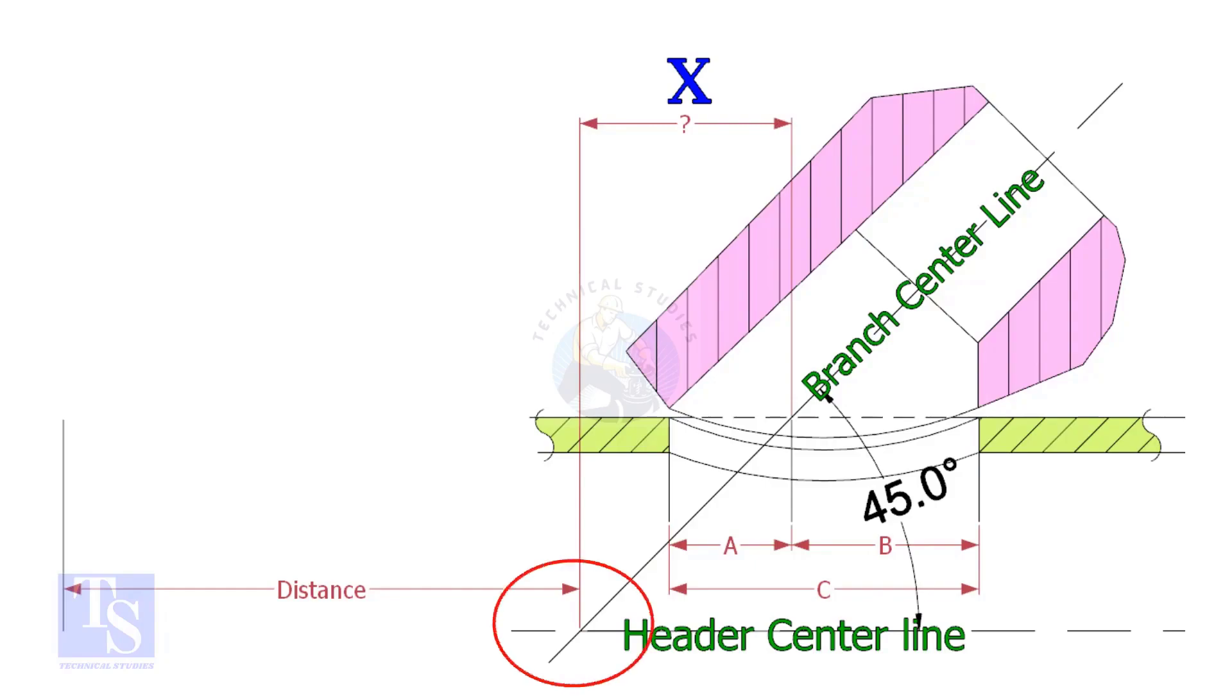This distance is actually on the center of the header pipe. By applying a simple calculation, we can find the actual center that comes on the top of the pipe. If the including angle is 45 degrees, the value of X will always be half OD of the header.